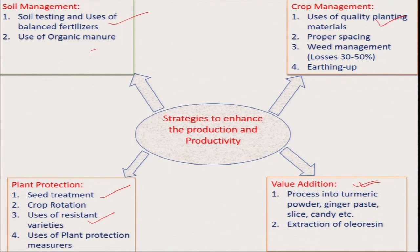Post-harvest processing and value addition has tremendous potential to enhance our export in case of horticultural crops. There is also a need for quality planting materials and seeds — maybe saplings — that should be virus- or disease-free and of good quality. These are the strategies to enhance the productivity and quality of organically produced crops, especially for horticultural crops like flowers, fruits, and vegetables.